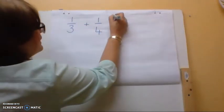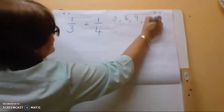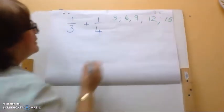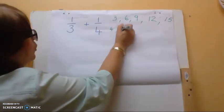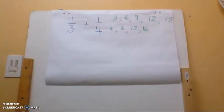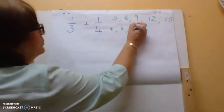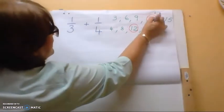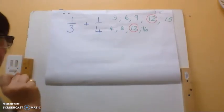My multiples of three: 3, 6, 9, 12, 15. And then my multiples of four: 4, 8, 12, 16. I'm looking for my lowest common denominator, and I can see from the multiples of three and the multiples of four that there is 12.